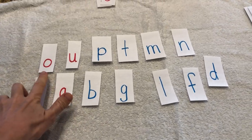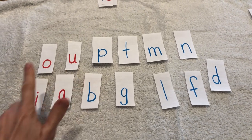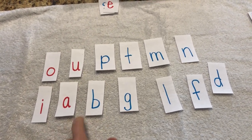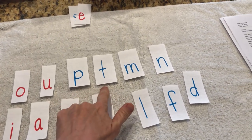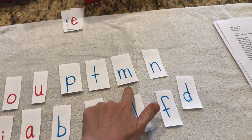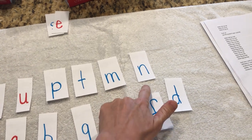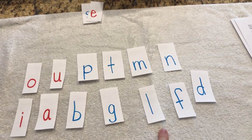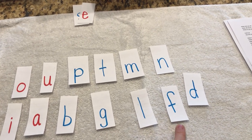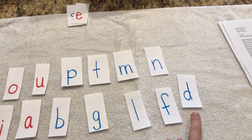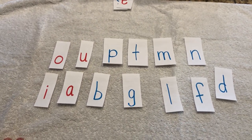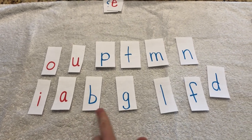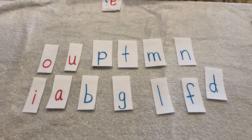So let's start: O — aw, U — uh, I — ih, A — ah, P — p, T — t, M — m, N — n, B — b, G — g, L — l, F — f, D — d. You'll notice I don't have the letters in any certain order, but I do want to make sure I'm separating my B from my D just in case.